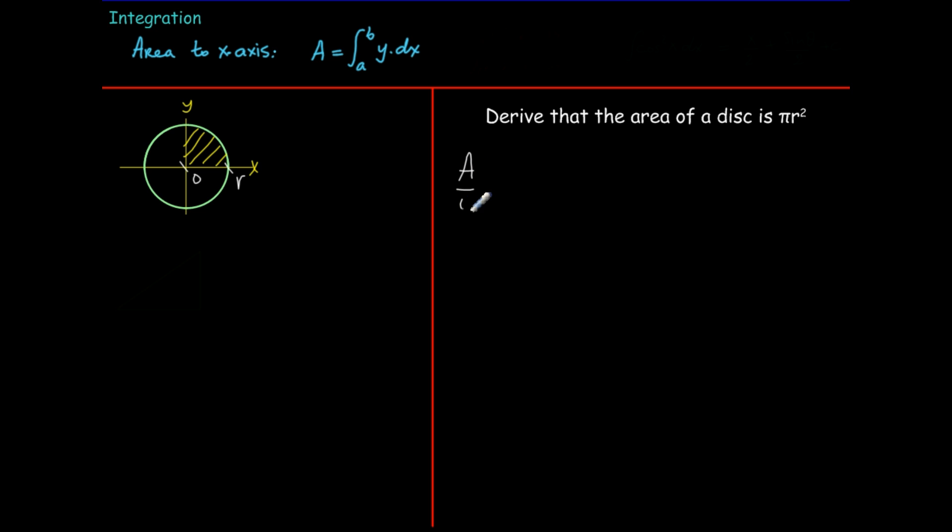So the area over four would be between r and zero of y dx and we'll have to ask ourselves what is y in this case. Well this is a circle with center at zero zero and the formula for a circle is x squared plus y squared is equal to r squared. So we see that y squared would be equal to r squared minus x squared.